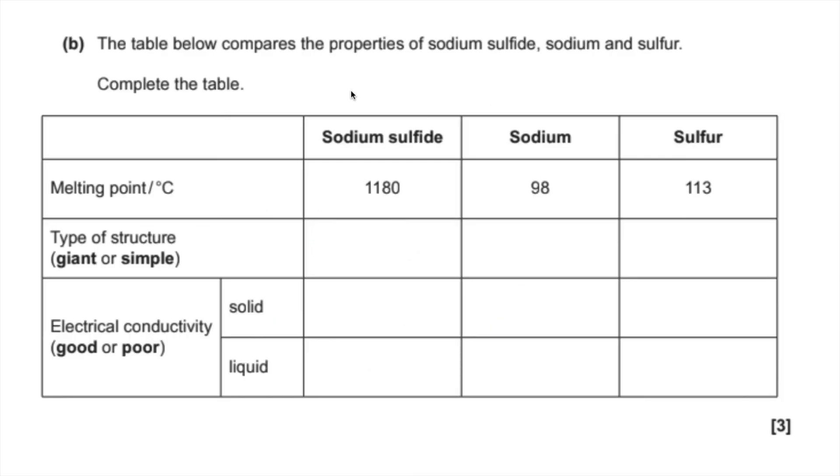So moving on to part B, we've got to complete this table. So before I've answered the question, I've just written up across the top what kind of bonding we've got. So sodium sulfide we already know is ionic. Sodium is a metal, so it's got metallic bonding. And sulfur is covalent.